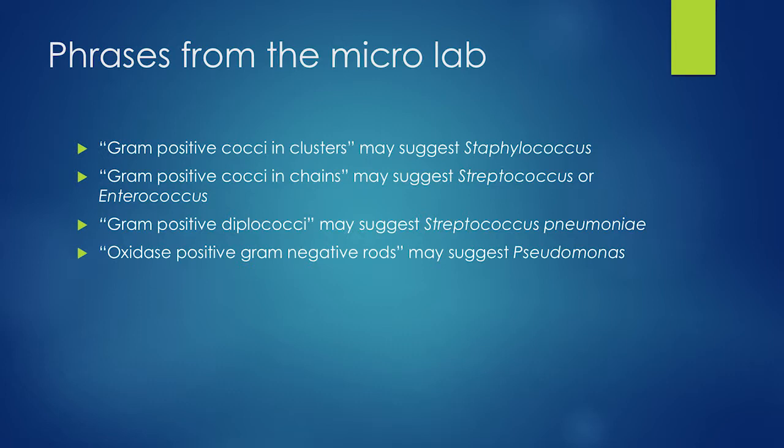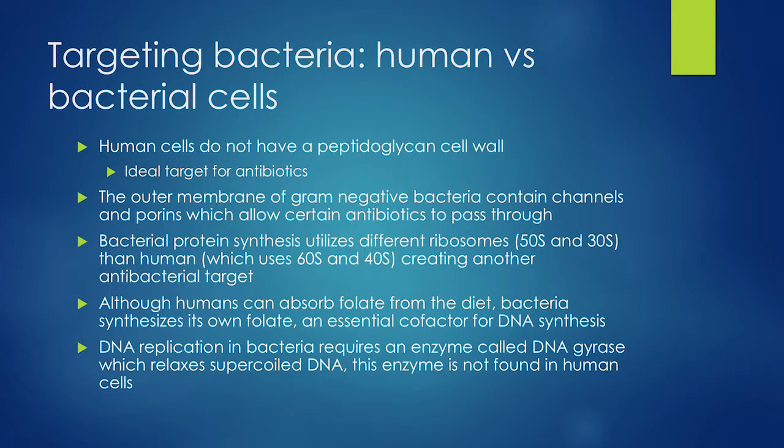Some common phrases from the micro lab: gram positive cocci in clusters commonly represent Staph aureus; gram positive cocci in chains could represent Streptococcus or Enterococcus; gram positive diplococci usually represents Streptococcus pneumoniae, one of the most common causes of community-acquired pneumonia; and oxidase-positive gram negative rods can be Pseudomonas.